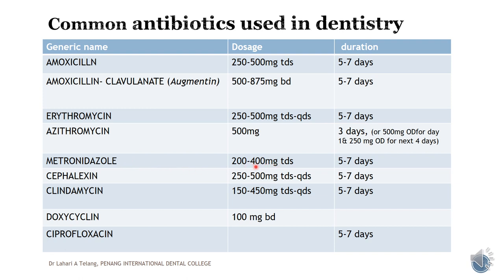Metronidazole is available in 200 to 400 mg dosage, with 400 mg preferred adult dosing three times a day for five to seven days. Cephalexin is a cephalosporin with similar dosaging — 500 milligrams three times a day. Clindamycin is available as 150 to 400 milligrams, given three times a day, sometimes extended to four times a day. Doxycycline is a tetracycline at 100 milligrams BD. Ciprofloxacin is generally given for five to seven days duration.